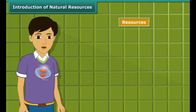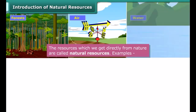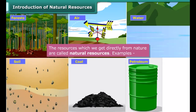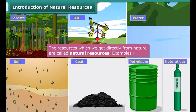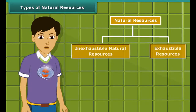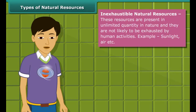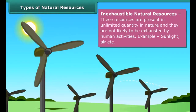You know, resources are of two types: natural and man-made. Natural resources such as forests, air, water, soil, coal, petroleum, and natural gas are directly obtained from nature. Natural resources can be broadly classified into two categories: inexhaustible natural resources and exhaustible resources. Inexhaustible natural resources are present in abundance; hence, it is unlikely that they will be exhausted by any human activity. Sunlight and air are examples of such resources.